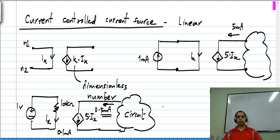That is a current controlled current source - it is a control source whose value depends on a current elsewhere in the circuit.